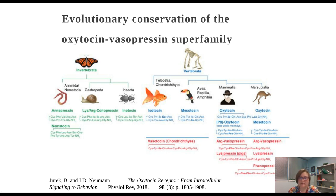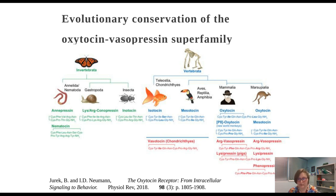At this point in teleosts, we see isotocin and vasotocin. In Aves, reptilia, and amphibians, we see mesotocin and vasotocin. By the time we get to humans, it's oxytocin and arginine vasopressin, although pigs have lysopressin and new world monkeys have a great variety of various oxytocin analogs. In marsupials, there's another gene duplication where they generally have two oxytocin analogs and three vasopressin analogs.